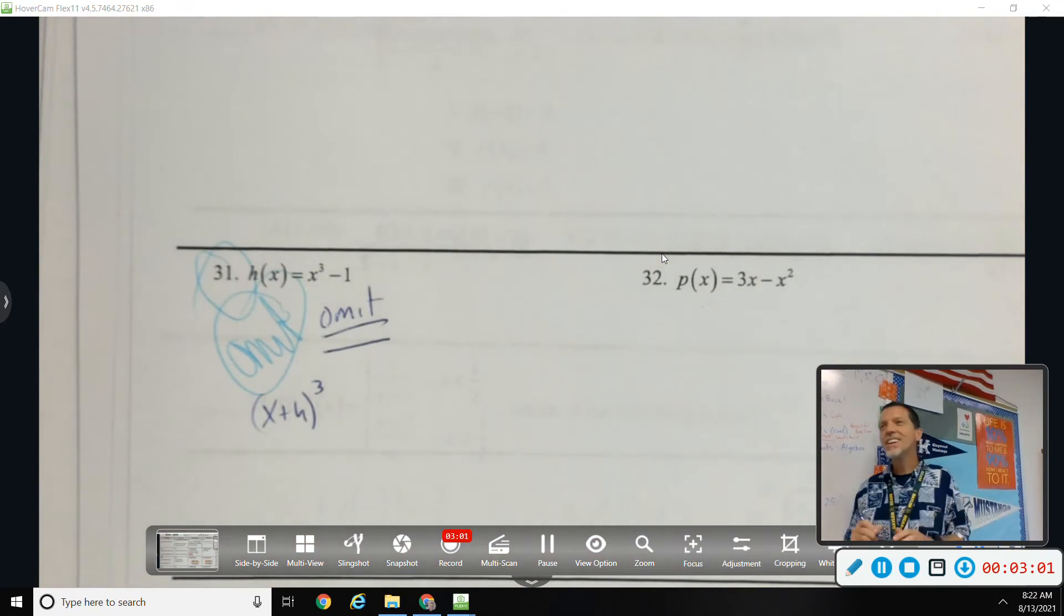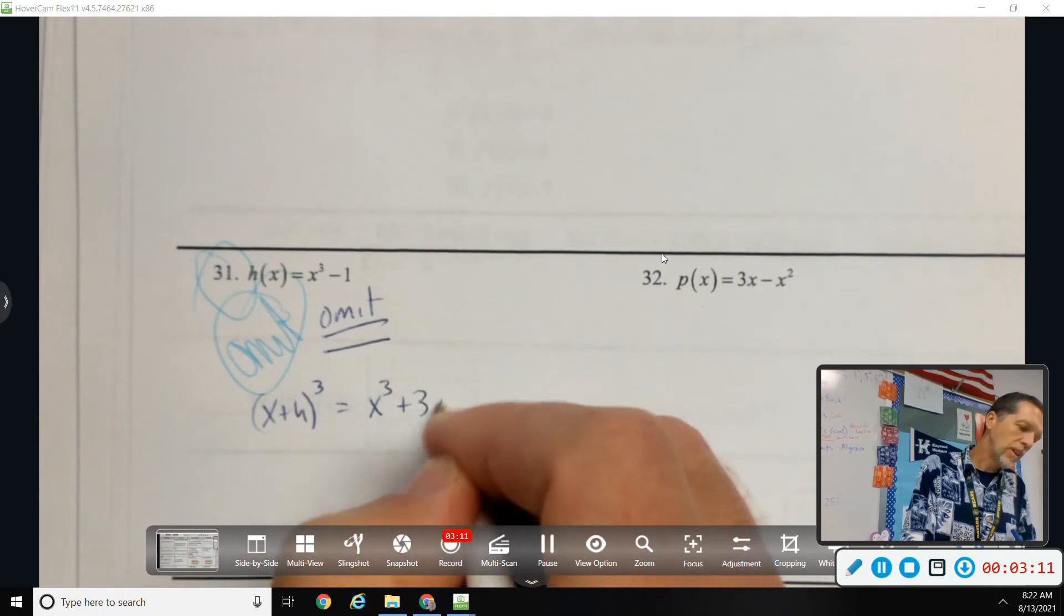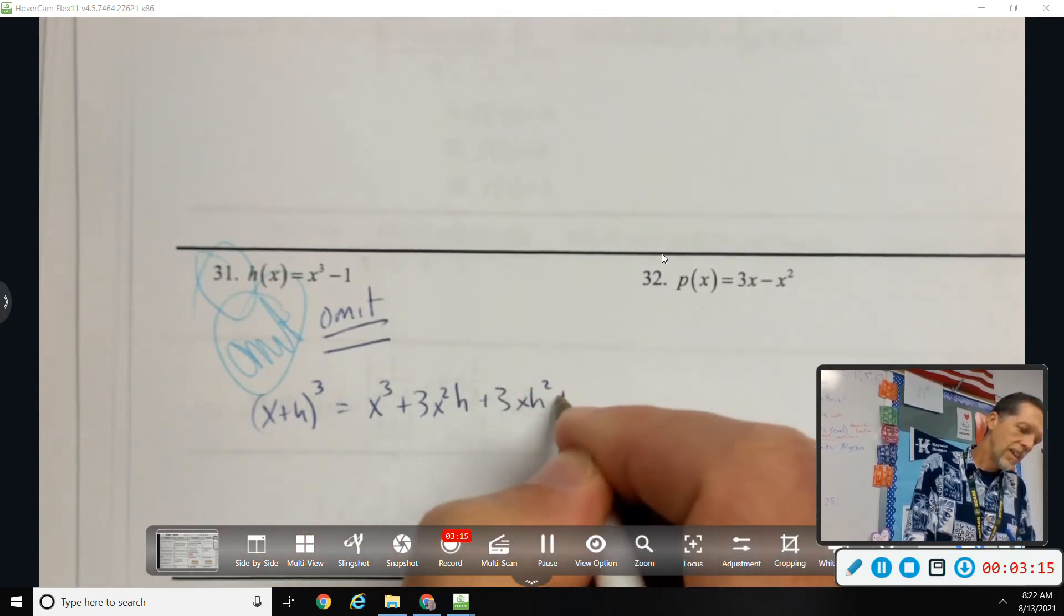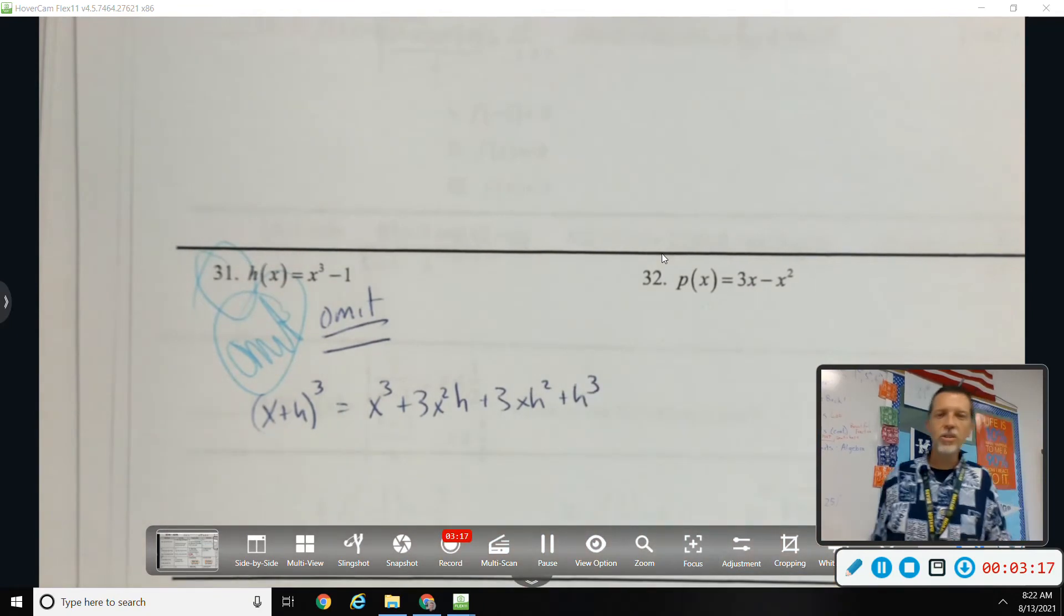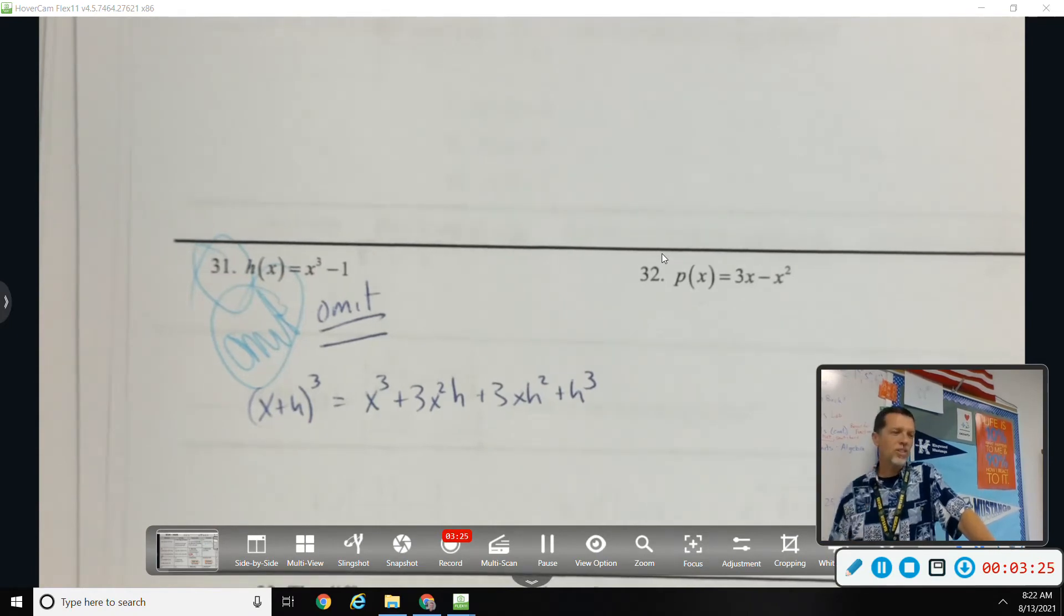It takes forever, so we would stop at the squareds for the difference quotient. Apologies on 31, omit that one, don't worry about it. Now other than 31, what questions do you have?